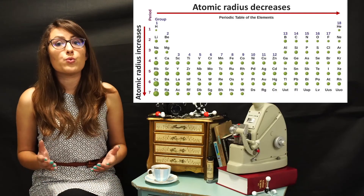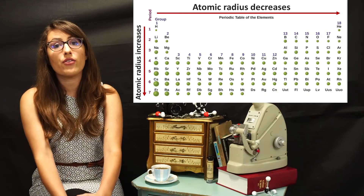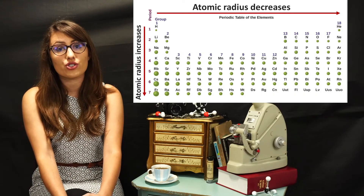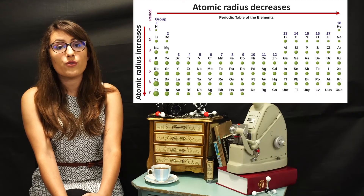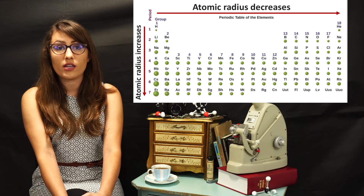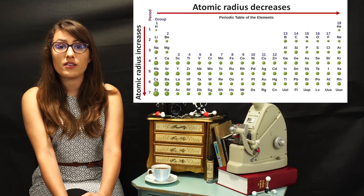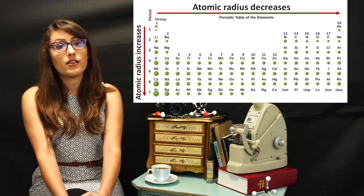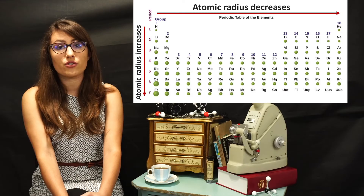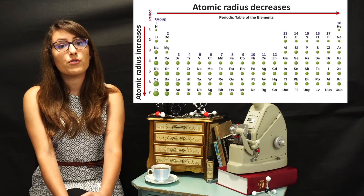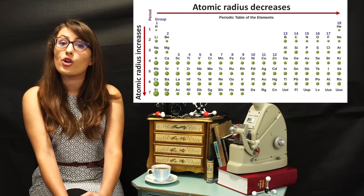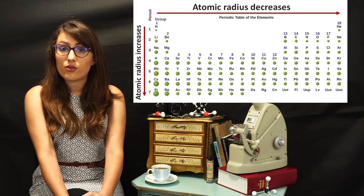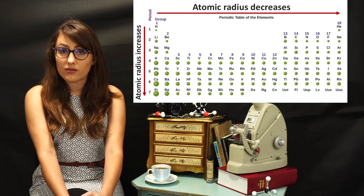Let's review this once again and make note of how the atomic radius changes. As you move left to right, the atomic radius decreases, because the effective nuclear charge increases. As you move down the group, the atomic radius increases due to the increased number of shells.